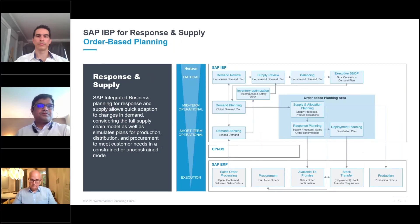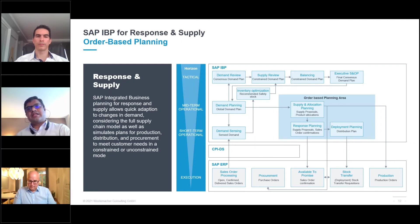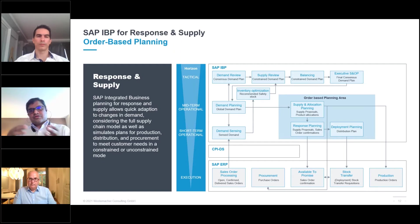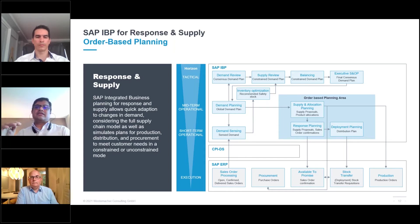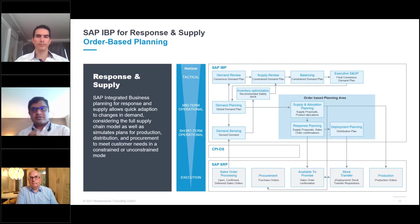Where does order-based planning fit in SAP Integrated Business Planning? Order-based planning enables organizations to plan for the availability of the right supply at the right location at the right time. Compared to other IBP planning functions that use time series, order-based planning focuses on a short-term view — mostly weekly to daily level — and allows you to respond to changes on shorter notice, looking at supply chain constraints and how to fulfill customer demand.